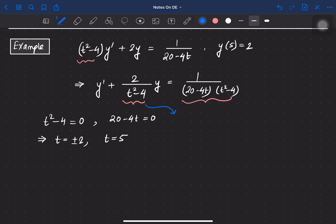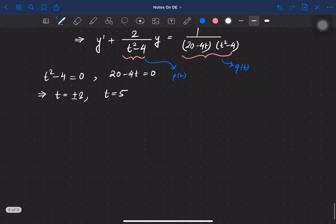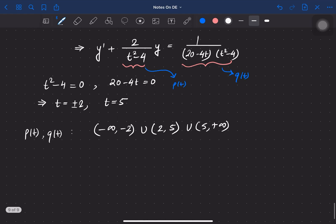this is p(t) and this is q(t). According to the result, we need to have continuous functions. At these points the functions are not defined. So what will be our interval where p and q are defined? For p and q, the intervals will be (-∞, -2) ∪ (2, 5) ∪ (5, +∞). But see,